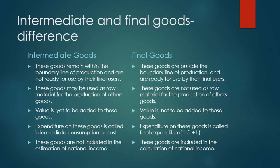The expenditure on intermediate goods is known as intermediate consumption — a very important term used frequently when discussing national income. Intermediate goods are not included in the estimation of national income; only final goods and services are included. This is because final goods already include the value of intermediate goods. Including both would lead to double counting, which is an overestimation of national income.